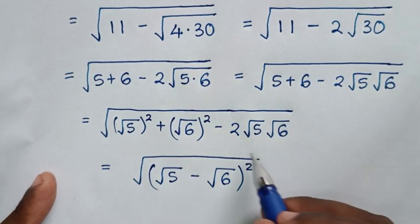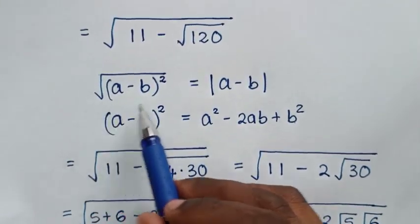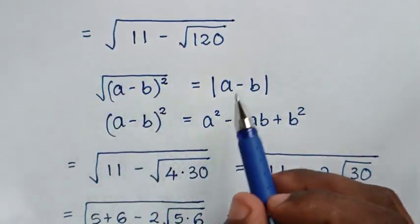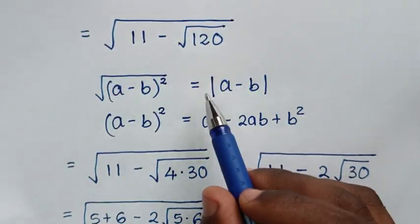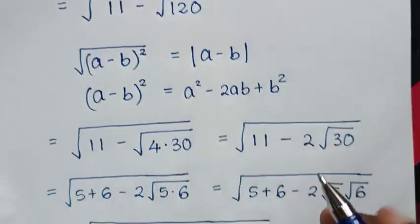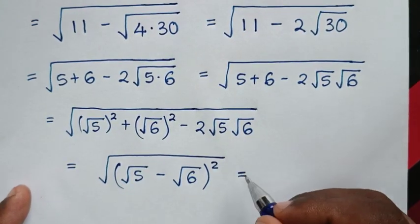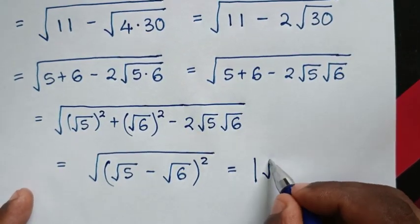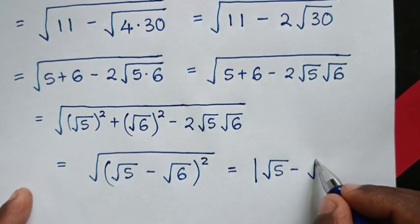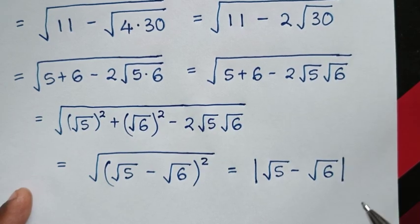This is in the form √(a - b)² = |a - b|, so our result is the absolute value of (√5 - √6).